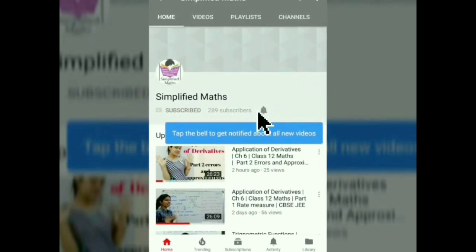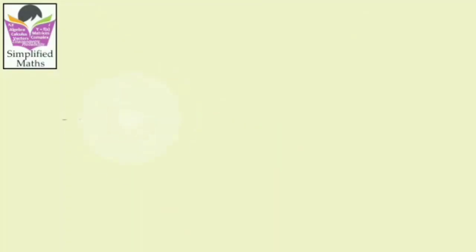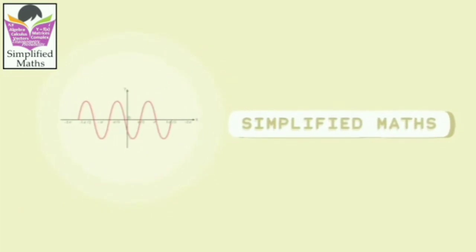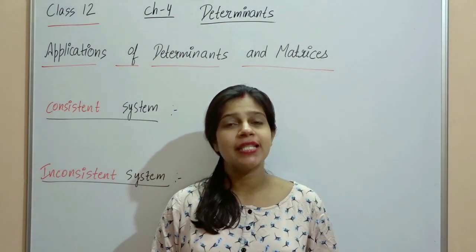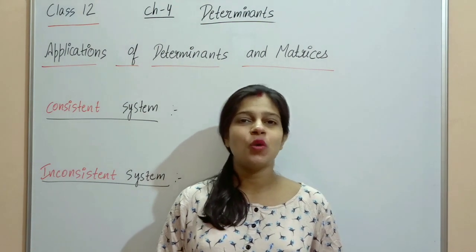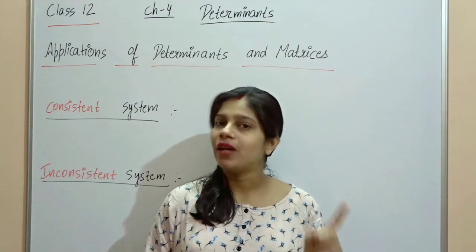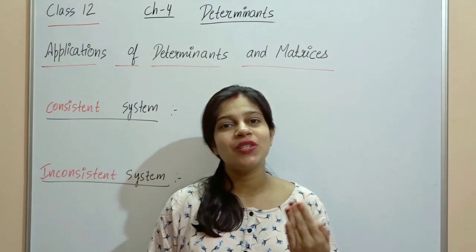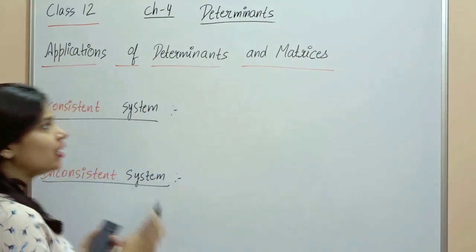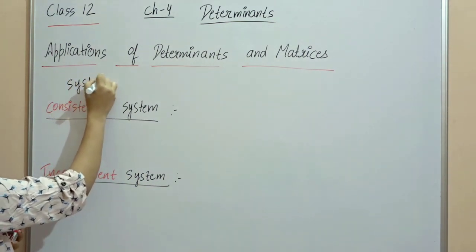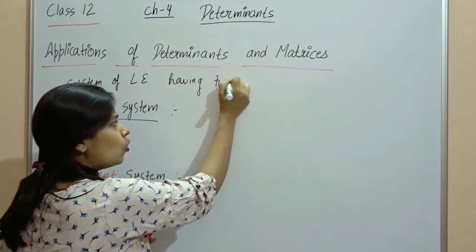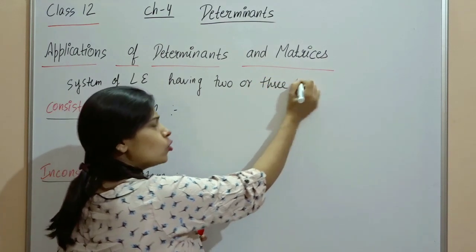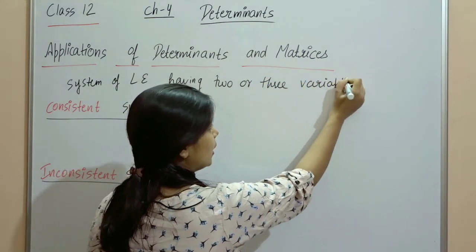So let's start! Applications of Determinants and Matrices. We will solve the system of linear equations having two or more variables. Linear means whose power is 1, variables whose values are x, y, z. So we will solve the system of linear equations having two or three variables. We will discuss this in this chapter.